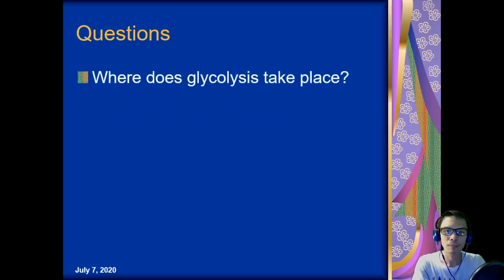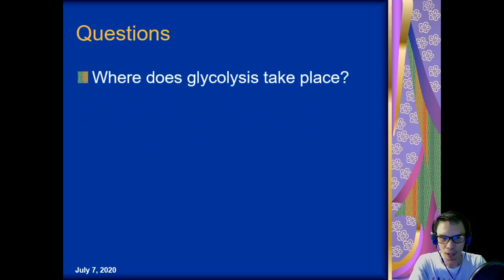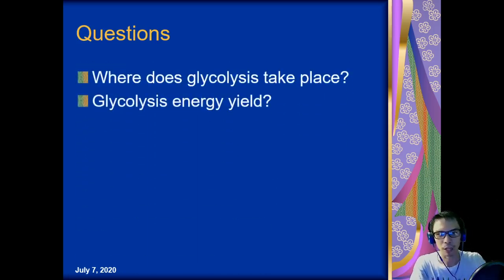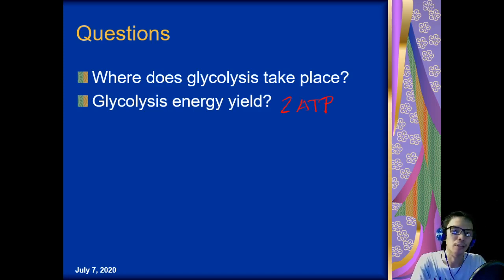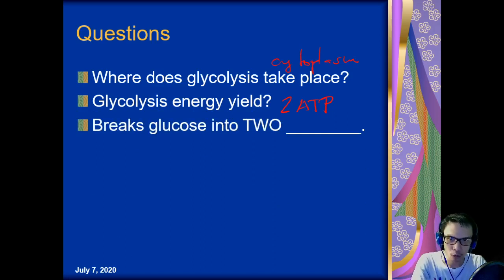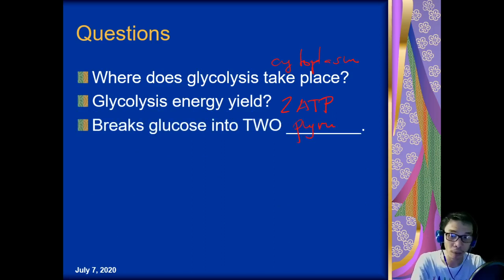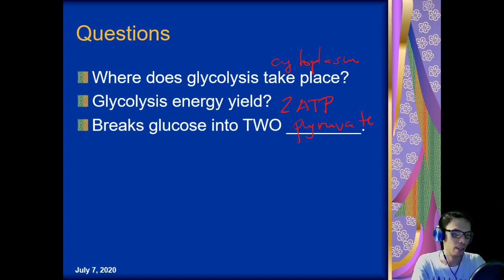To double-check: glycolysis takes place in the cytoplasm, the energy yield is 2 ATP, and glucose is broken down into 2 pyruvates, also called pyruvic acid.